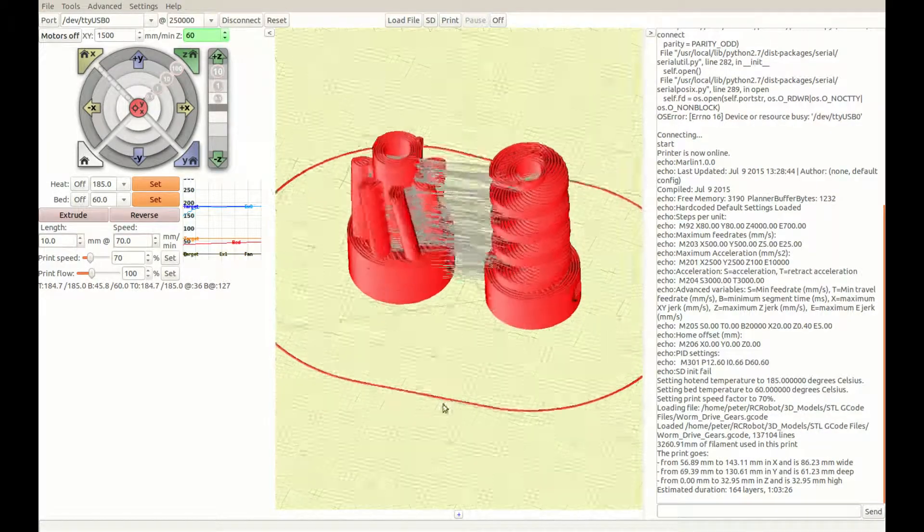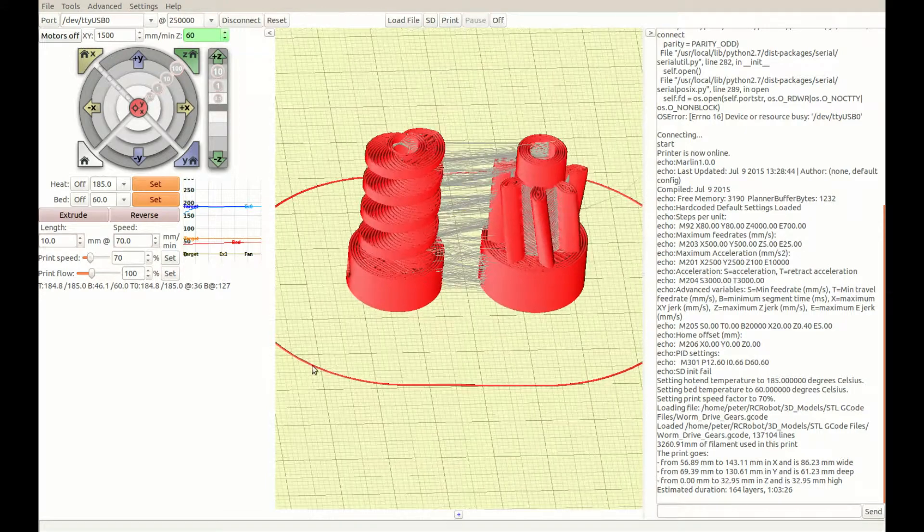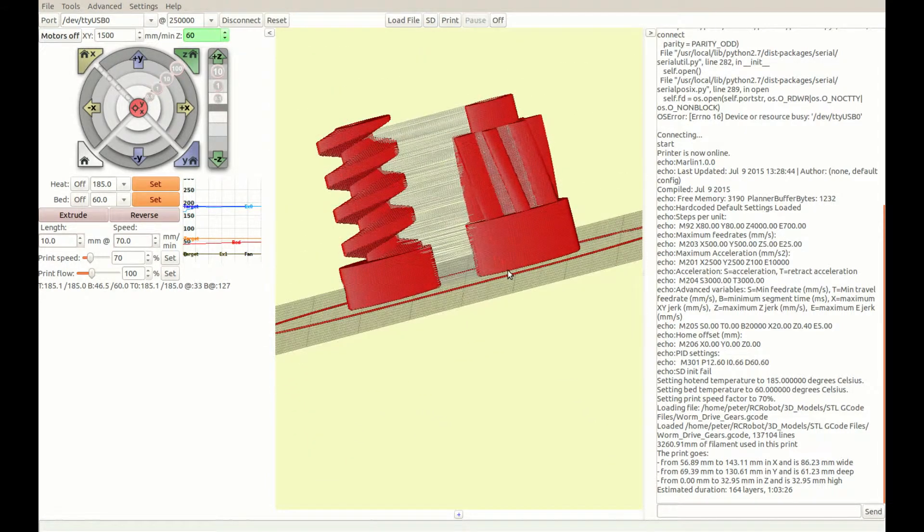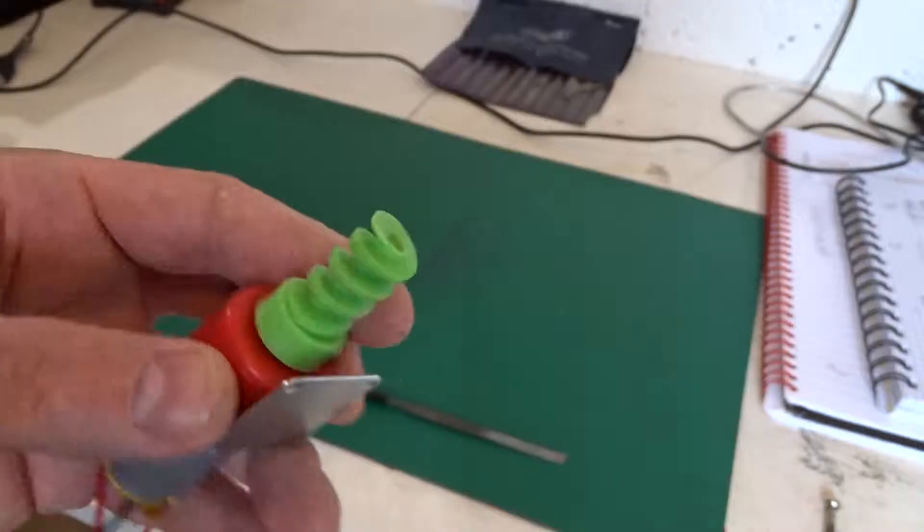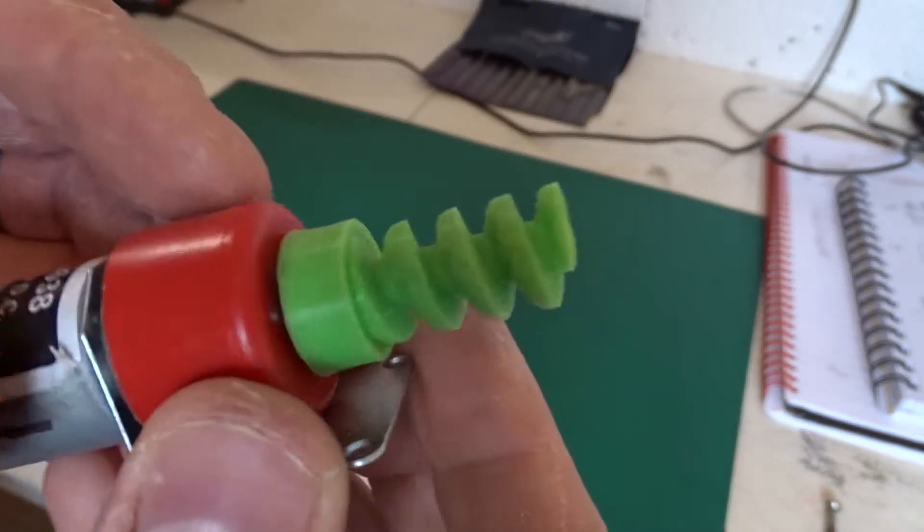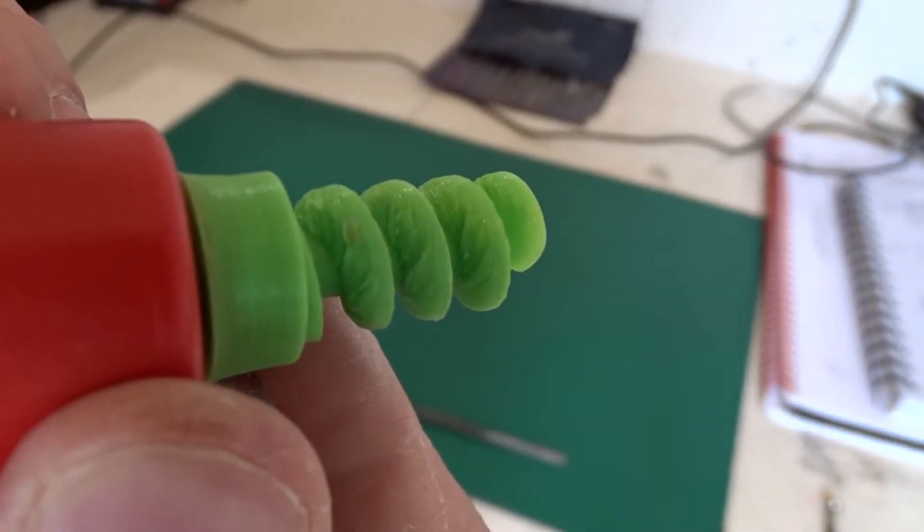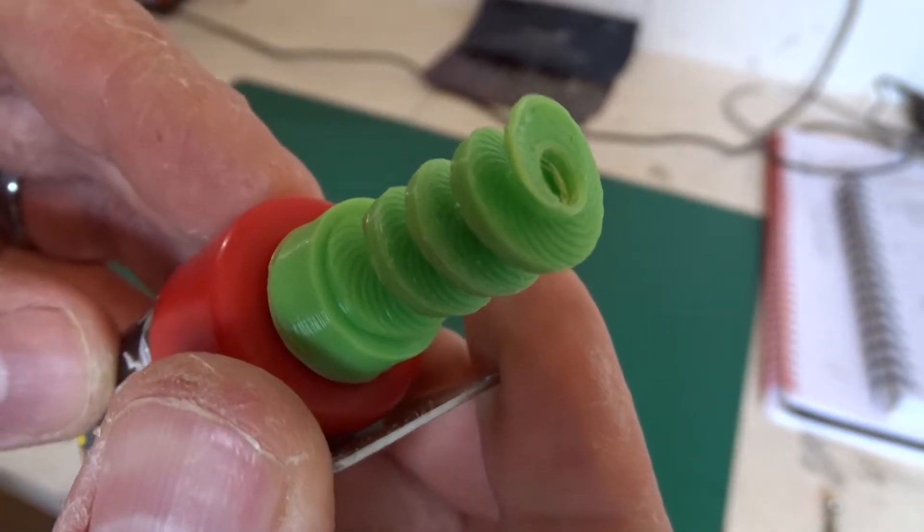So you can see the two gears ready to print. I printed them. The worm gear stood up as you can see, on a slow speed setting. And it came out quite well. There was a bit of overhang, a bit of droop.